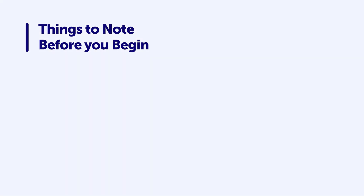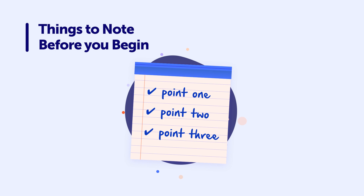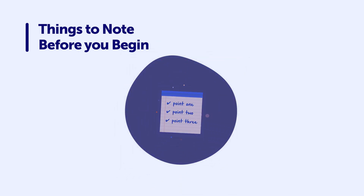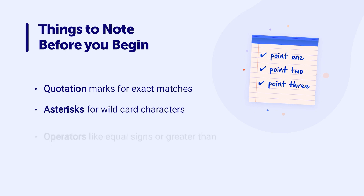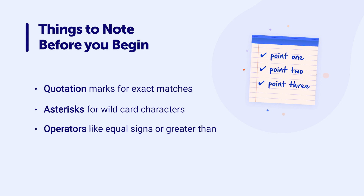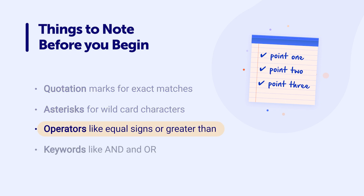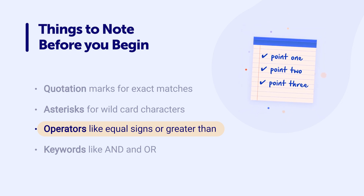Before you begin typing out your CQL query, it is important to know a few things. First, despite being advanced, the CQL search uses basic Confluence search syntax, which includes: quotation marks for exact matches, asterisks for wildcard characters, operators like equal signs or greater than, and keywords like AND and OR. The most important ones to remember will likely be using operators to combine search terms, but to view more Confluence search syntax capabilities, read the Atlassian support documentation.